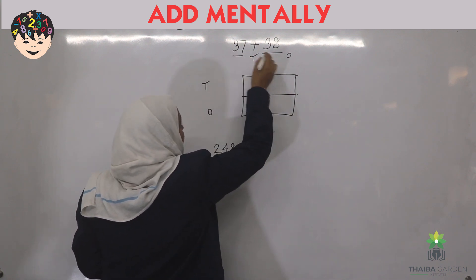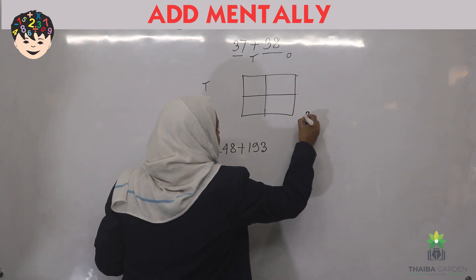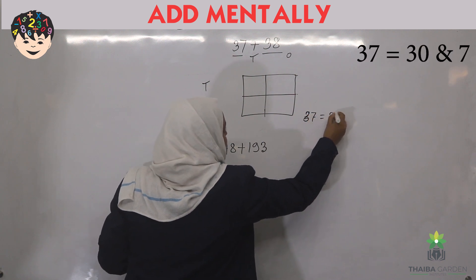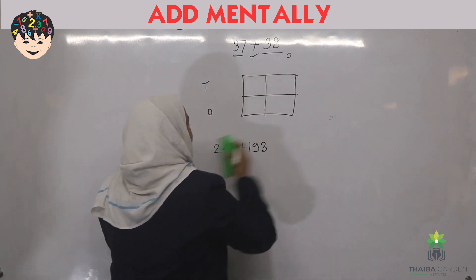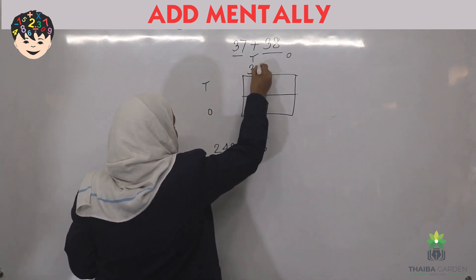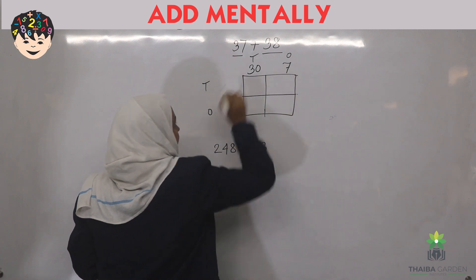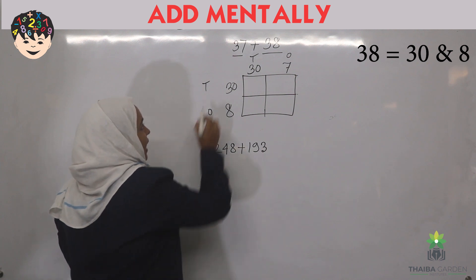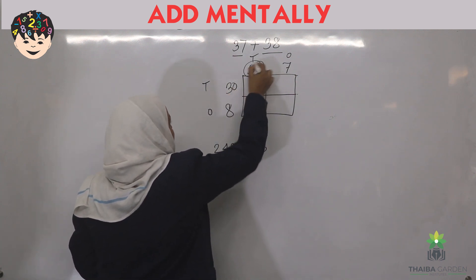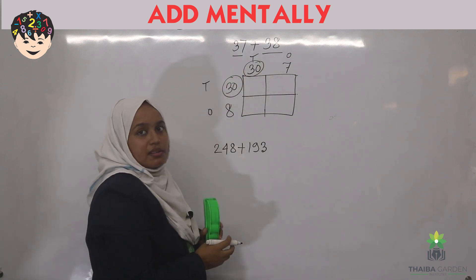So there is 37. We all know that 37 is 30 and 7, is not it? So you can write here 30 and here 7, and 38 is 30 and 8. So first add the two numbers which is in ten's place.